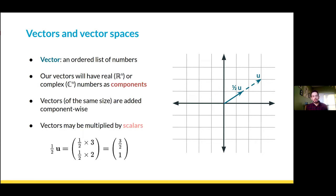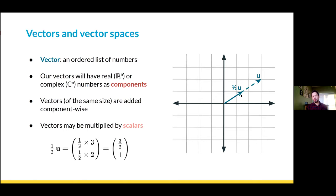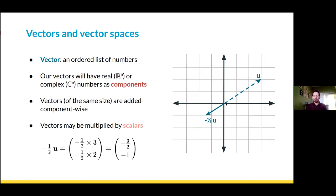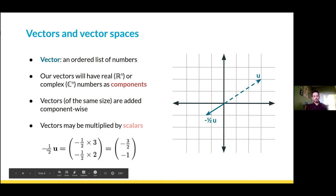Vectors can also be multiplied by scalars. We can take a regular old real number and multiply it by the vector u, which just multiplies each component by that scalar. Here u goes from being (3, 2) to (3/2, 1). In the picture, you can see that we're basically scaling its length — we're stretching the vector but not changing its direction in space. The only exception is we can flip the vector by multiplying by a negative number, so the orientation points the other way. This is the case of negative one-half times u.